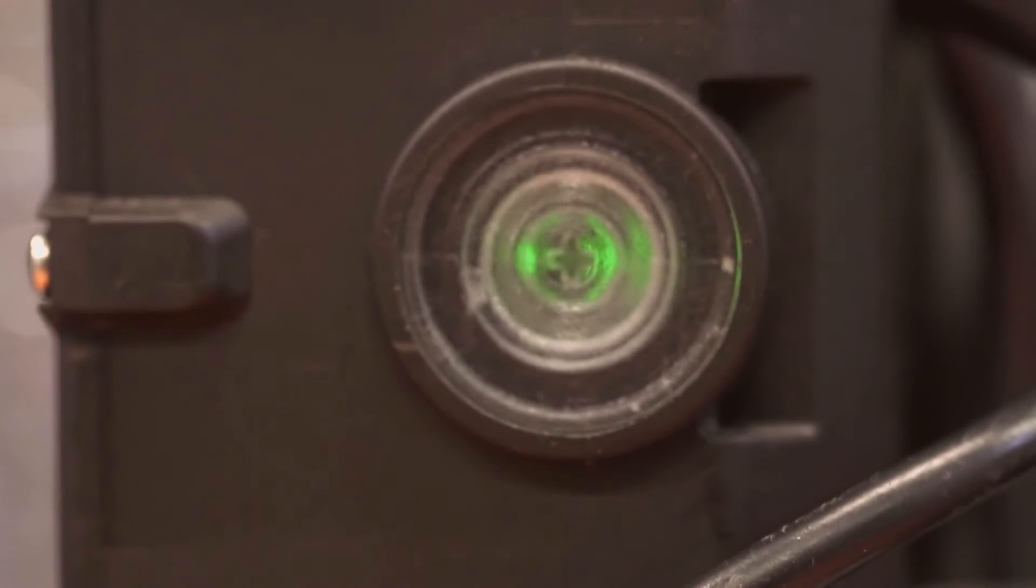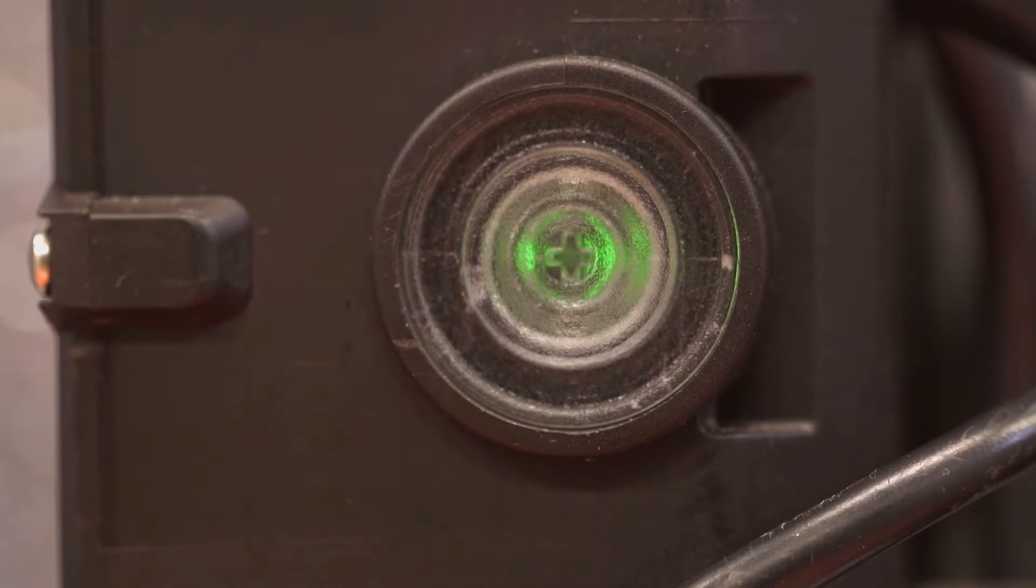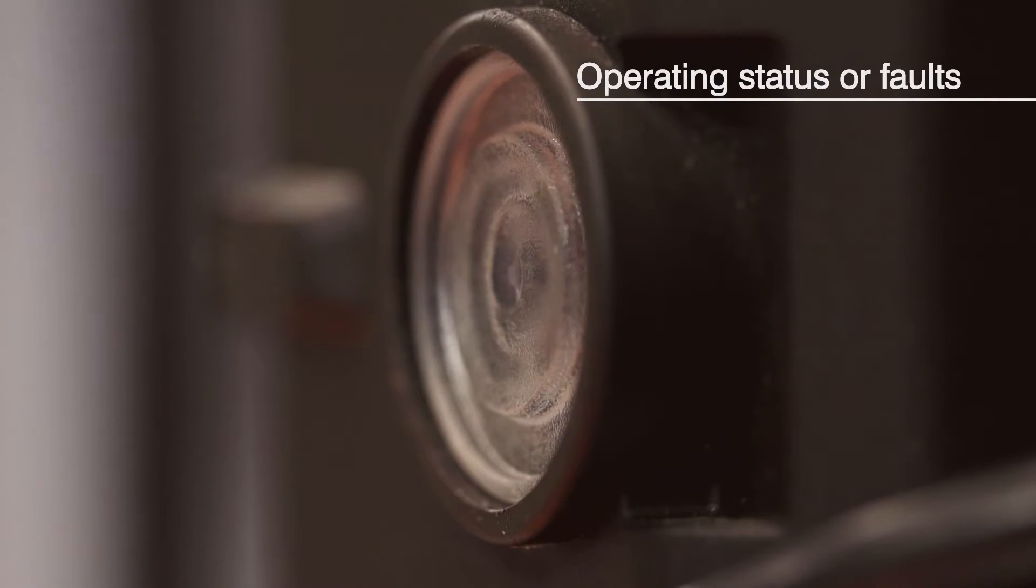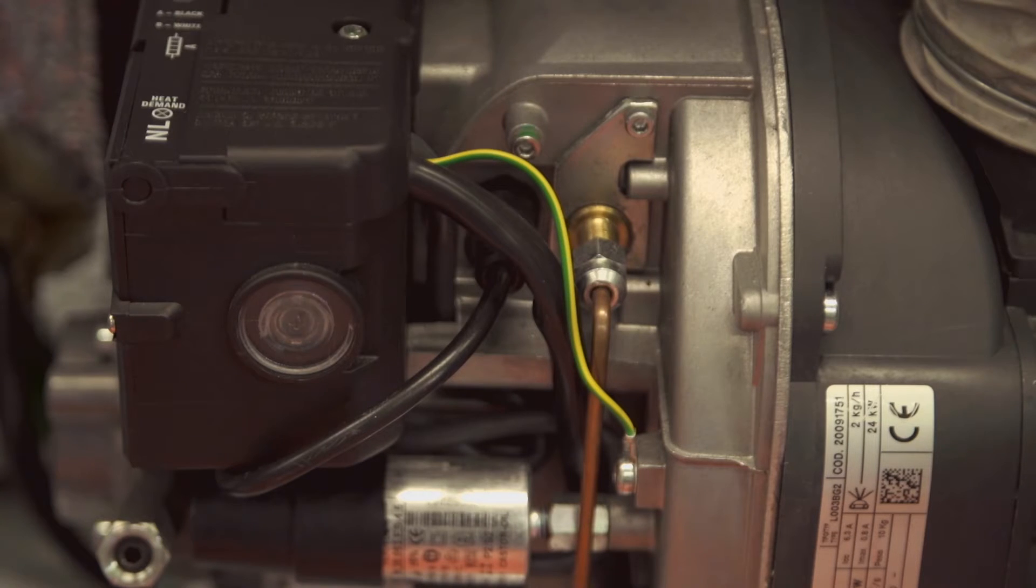When the burner is running, the control box will indicate either the operating status of the burner or any burner faults depending on the color of the reset button. When the burner is running normally, the reset button will be green, and if it locks out, it'll change to red. Other operating modes and faults are indicated by different colors. Check in the installation instructions for details.